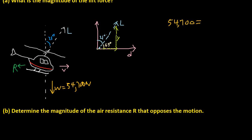So 54,700 newtons must equal, how do we calculate y here? We can just do L sine of 69, because it's opposite over hypotenuse, so sine of 69 is opposite over hypotenuse. So L times sine of 69 is the y.